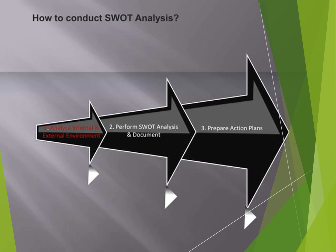How to conduct SWOT analysis involves three basic steps. First, analyze the internal and external environment — internal covers strengths and weaknesses, external covers opportunities and threats. Second, perform the SWOT analysis and document findings. Third, prepare action plans for the future course of action.